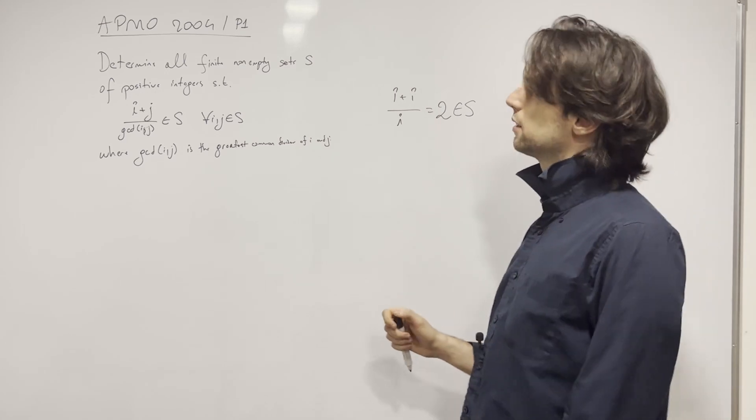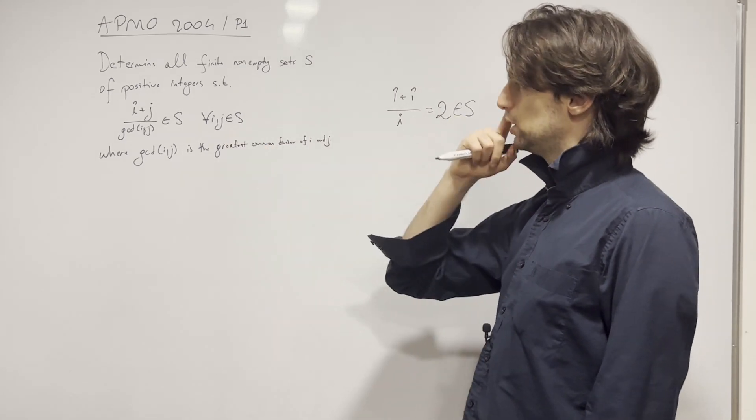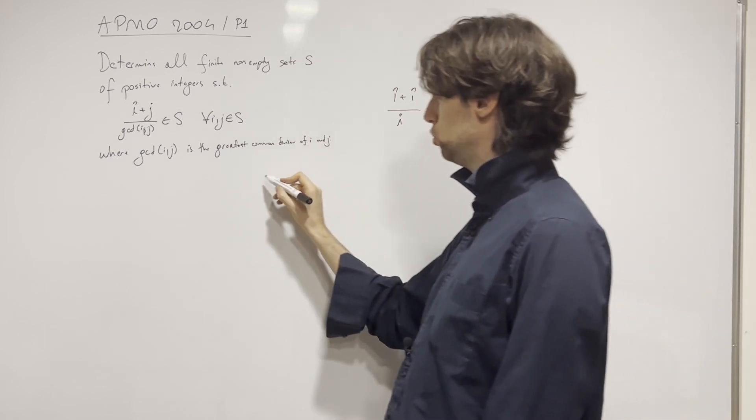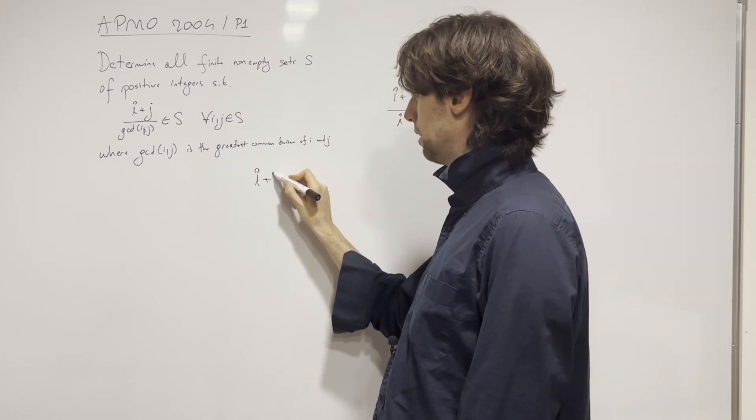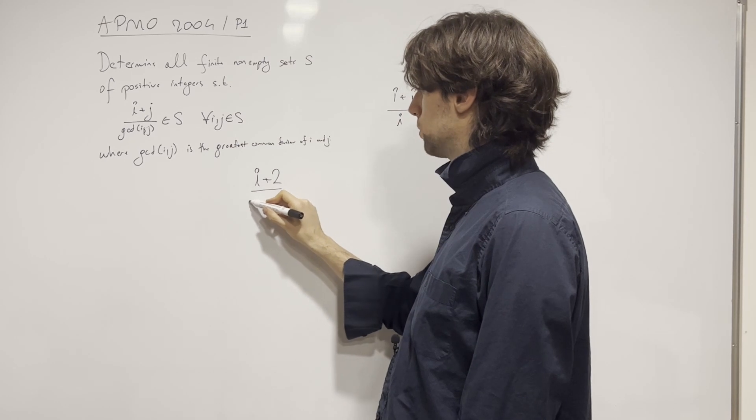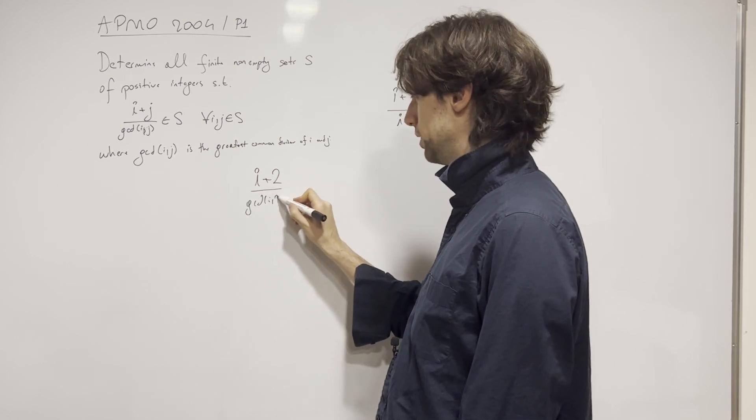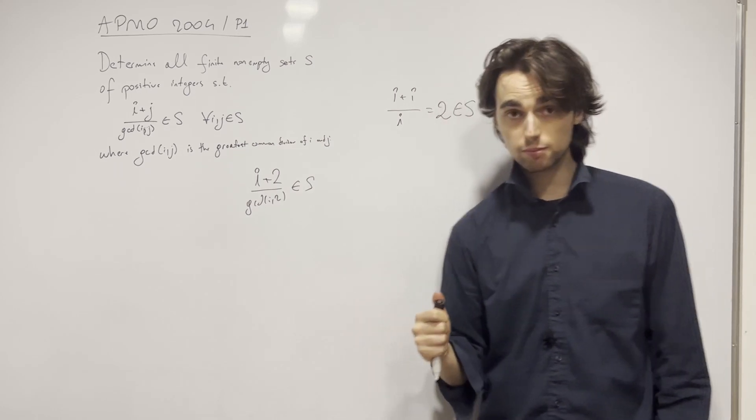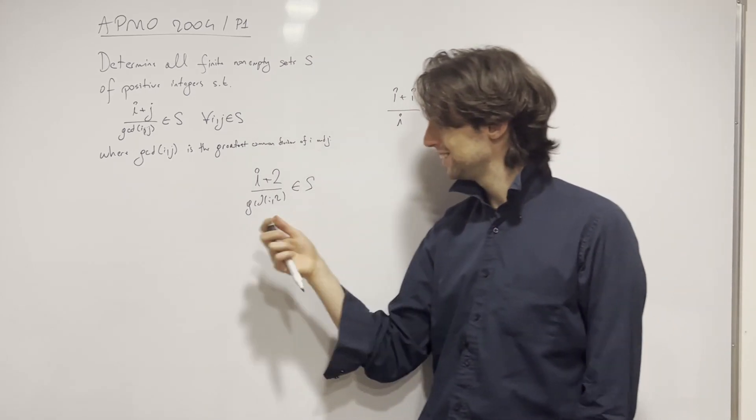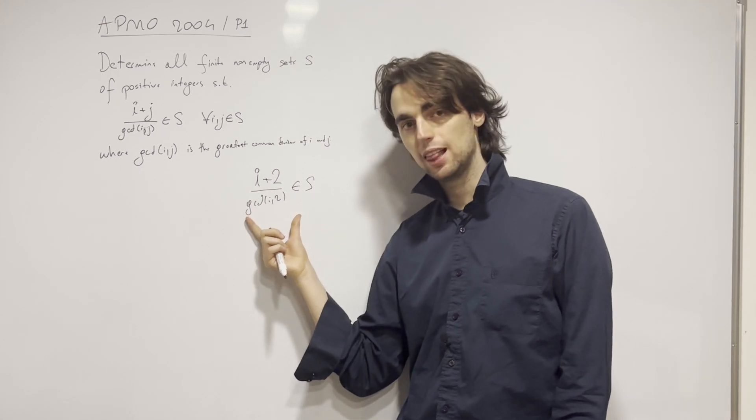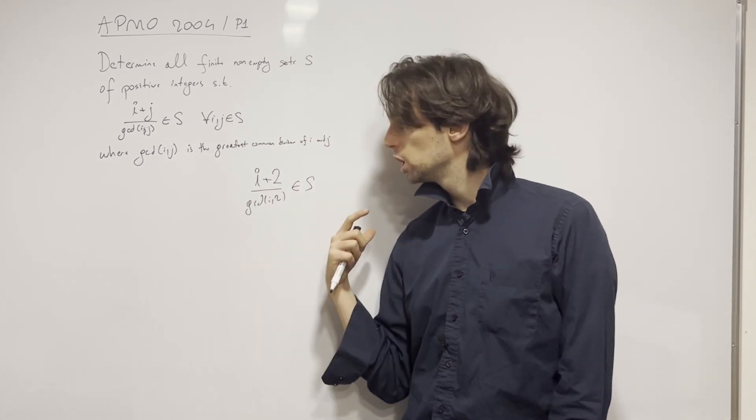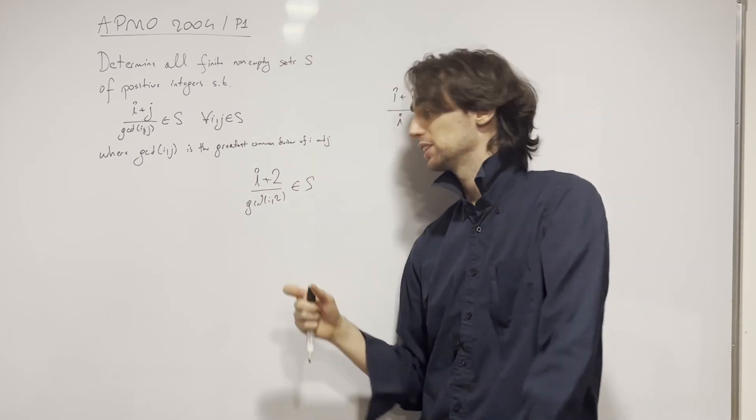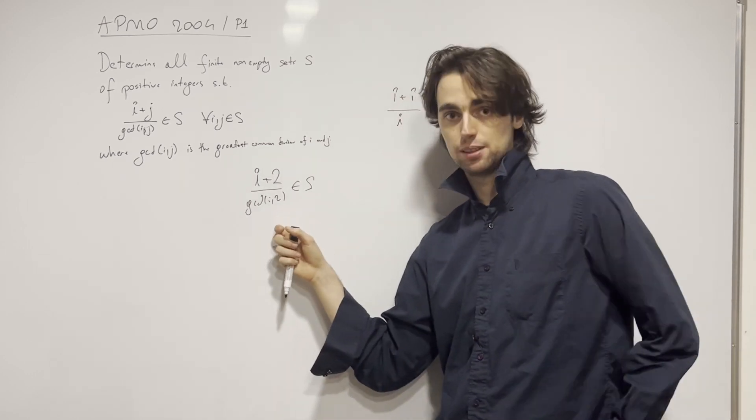And now, let's look at this GCD. So I know 2 is definitely in it. So I know if I have a 2 and an i, I have that (i+2)/GCD(i,2) is also an element of S. And my question for you is, when will this give me an infinite number of elements in S? I invite you to pause for 5 minutes and ask yourself, in which case will this happen? For which i?